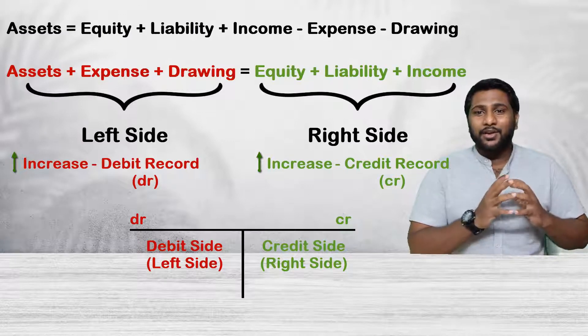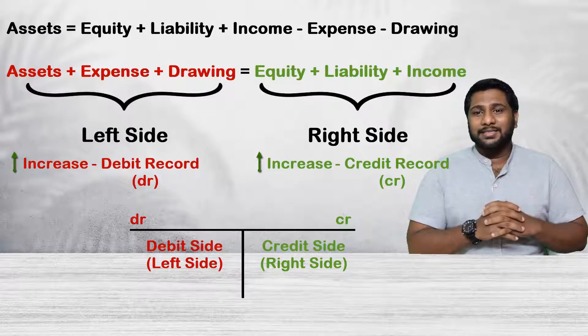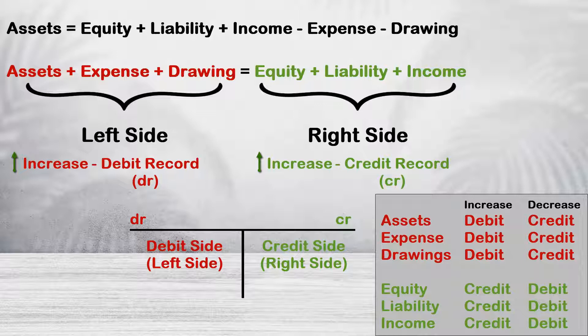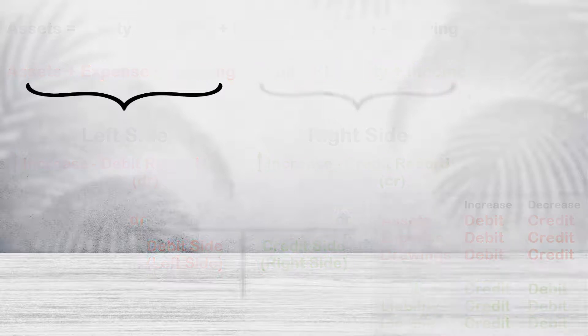So your double entry rule will be like this: if assets increase, expenses increase, or drawings increase — left side of the equation increases — debit. If it decreases, credit. If your right side of the equation increases — equity, liability, and income increases — it should be credit. If it decreases, it should be debit.